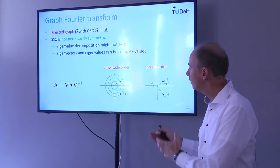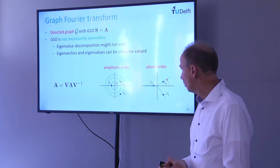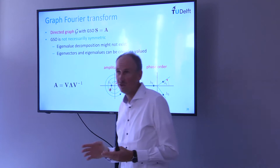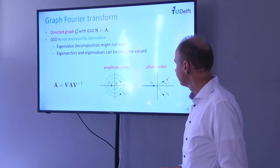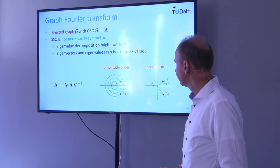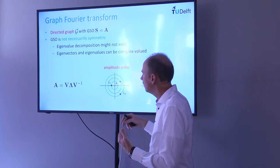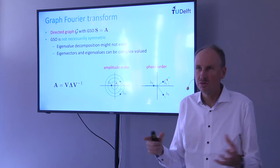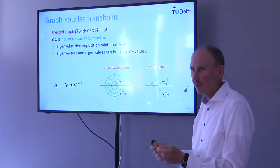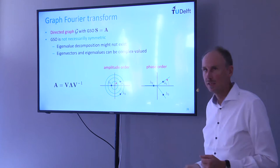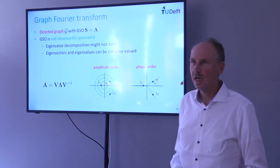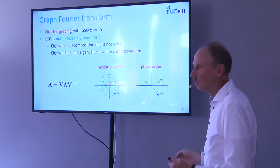For directed graphs with the adjacency matrix as shift operator: the matrix is non-symmetric, eigendecomposition may not always exist, and eigenvalues are complex-valued. The frequency modes are the rows of V⁻¹ rather than the eigenvectors. To order them, we use the total variation formula, which gives the modulus of (1 - λ_i / λ_max) times the L1 norm of the eigenvector. This means you should order eigenvalues by their distance to the point |λ_max| on the real axis in the complex plane.